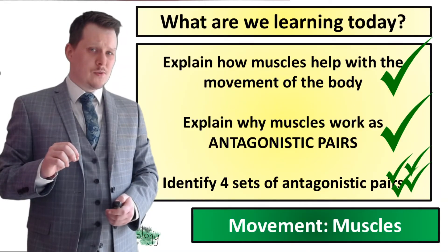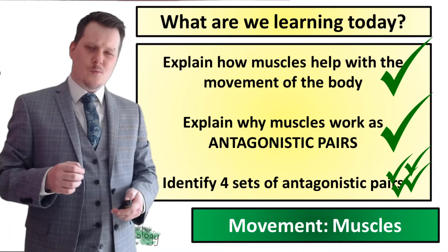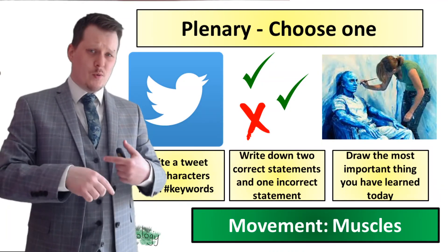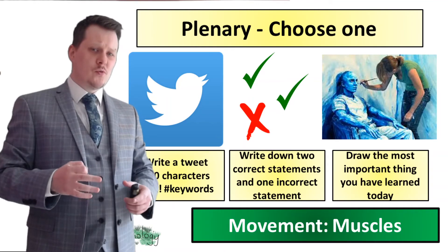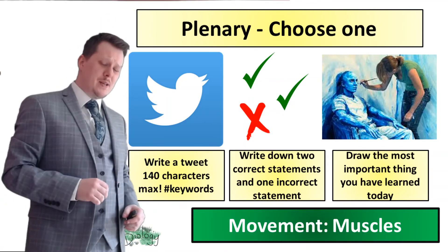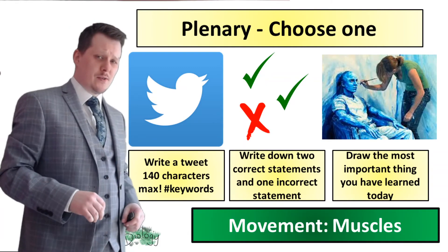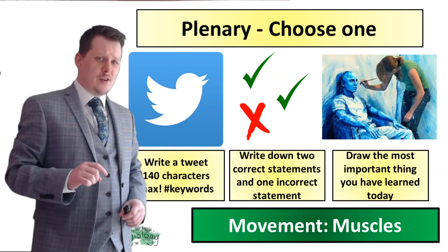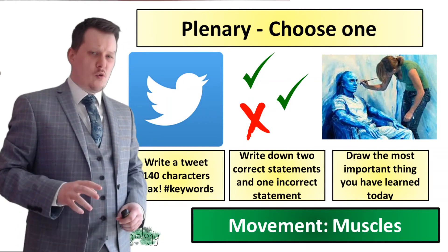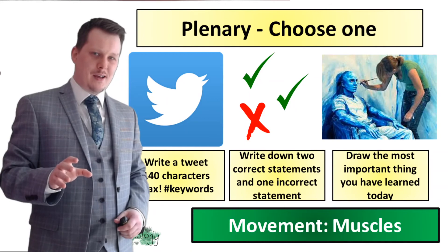We've looked at muscles around the body — ones we have control over and ones we don't. For our last task you can choose: write a tweet about what you've learned today, 140 characters max, and hashtag the key words; write down two correct statements and one incorrect statement; or draw the most important thing you've learned today.